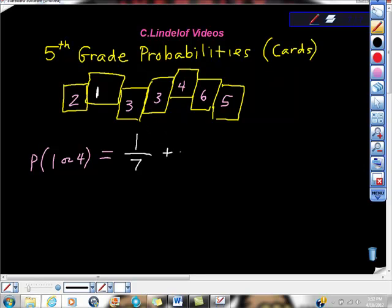Or, which means plus sign in probability, or a four. So I started looking for fours, and lo and behold, I found exactly one four. So I looked, counted my fours, and there was only one, so there's one four out of seven cards. So what's the probability that we get a one or a four? Well, the probability is one plus one is two, so two-sevenths.